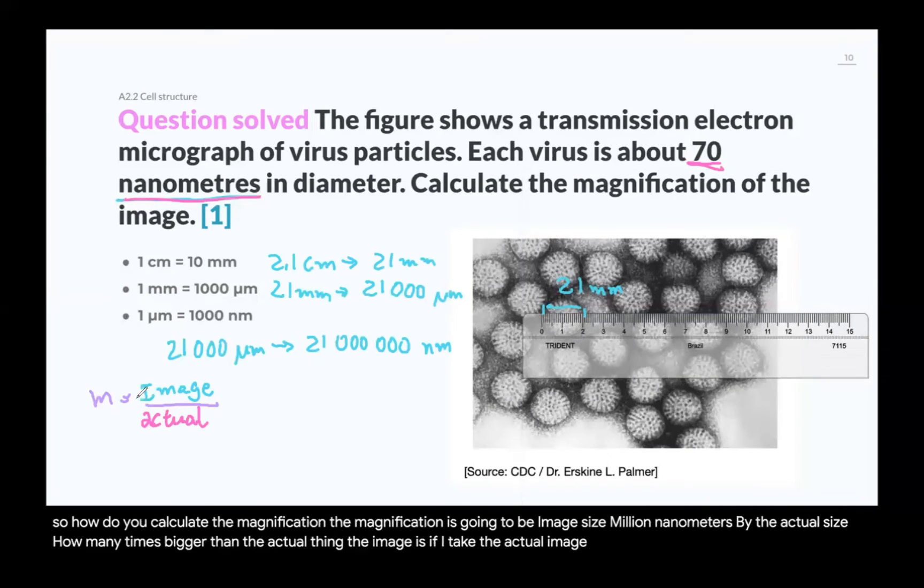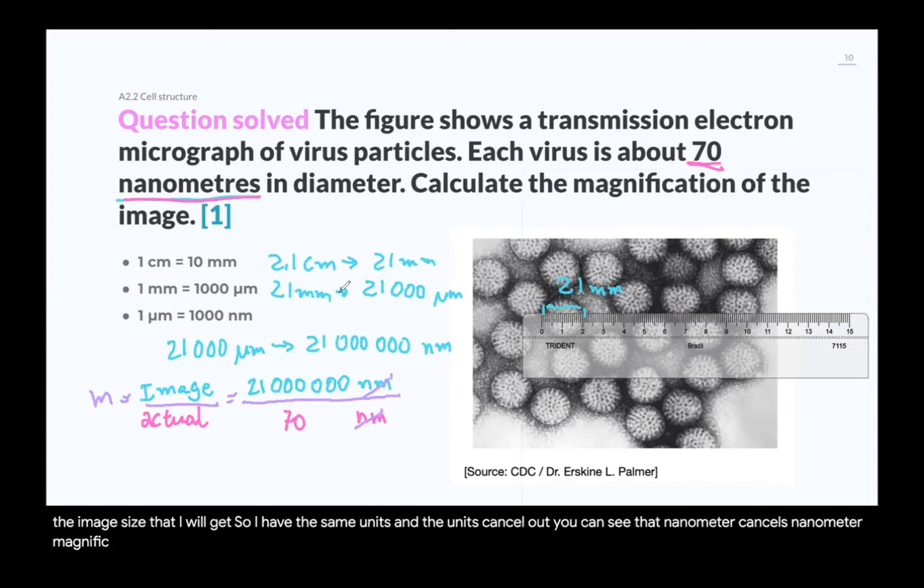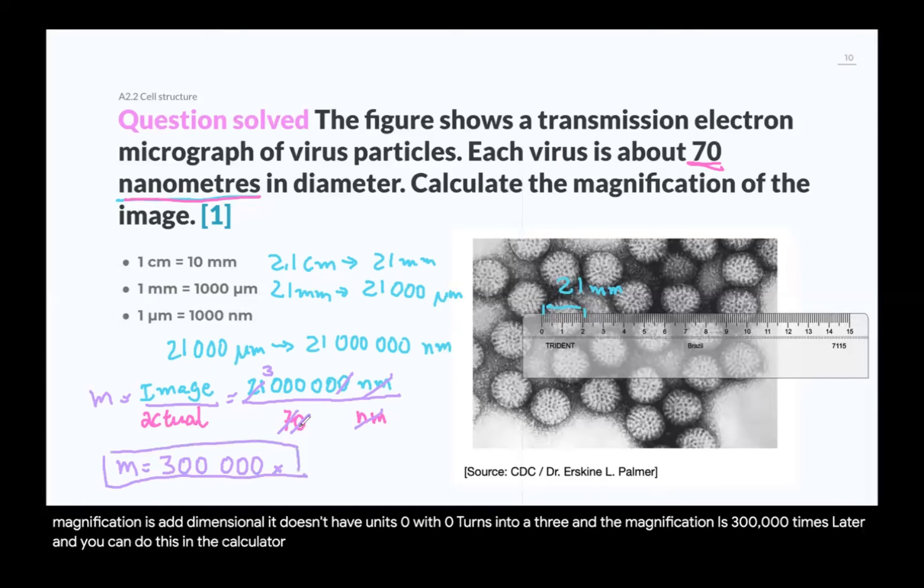Magnification means how many times bigger than the actual thing the image is. If I take the actual image and multiply by this magnification, what is the image size that I will get? I have the same units, and the units cancel out. You can see that nanometer cancels nanometer. Magnification is ad-dimensional. It doesn't have units. Zero with zero. Seven, this 21 turns into a three, and the magnification is 300,000 times. Of course, you have a calculator, and you can do this in the calculator, especially because it's just a one mark question. They just care about the final number.